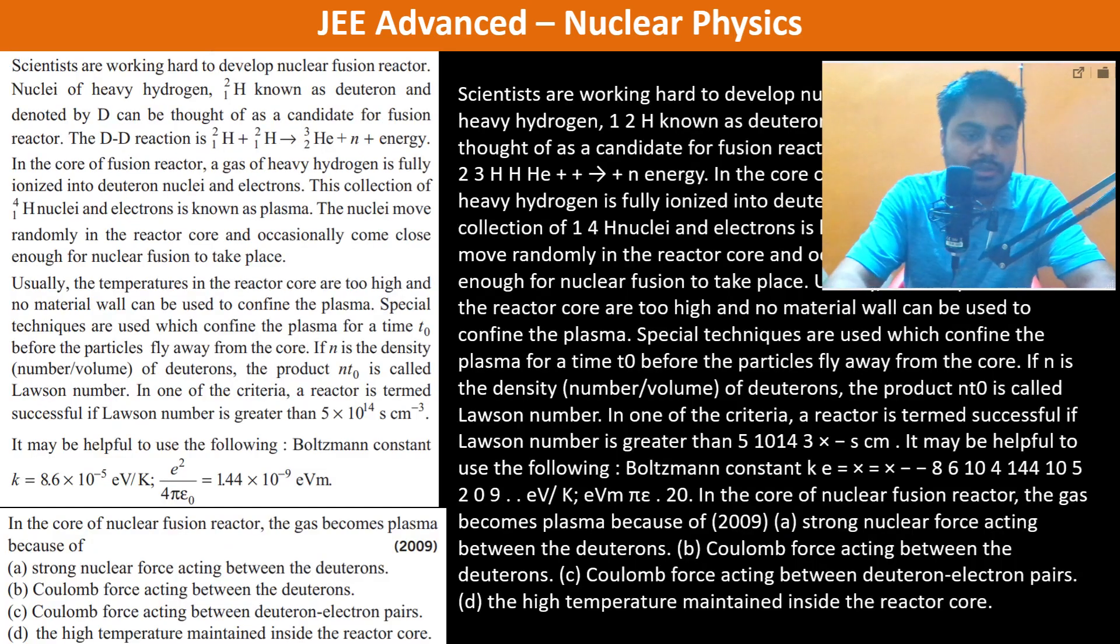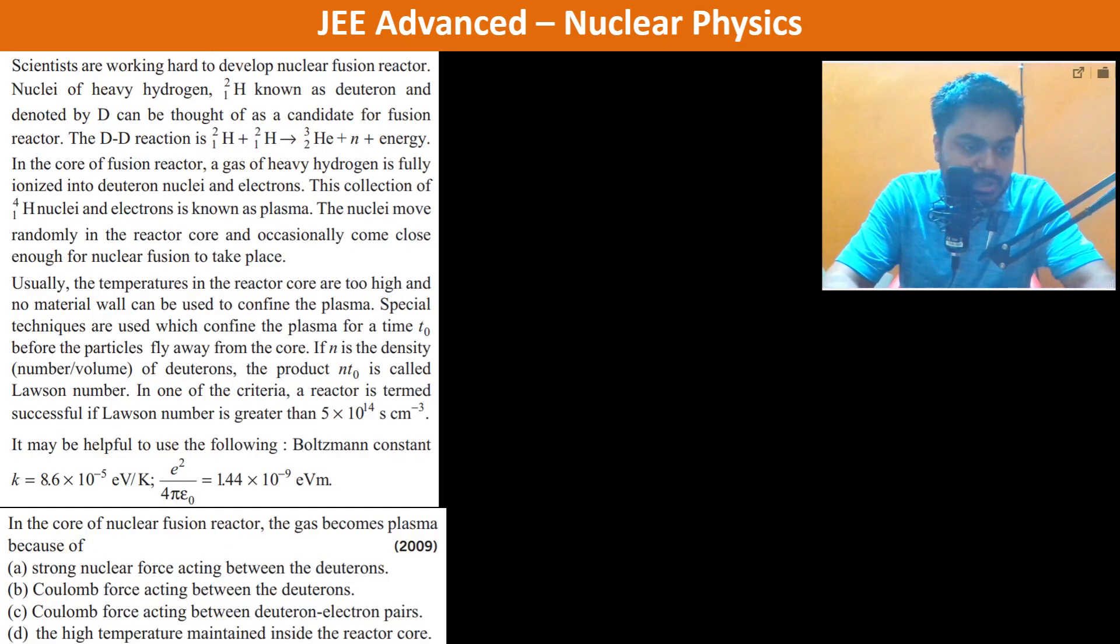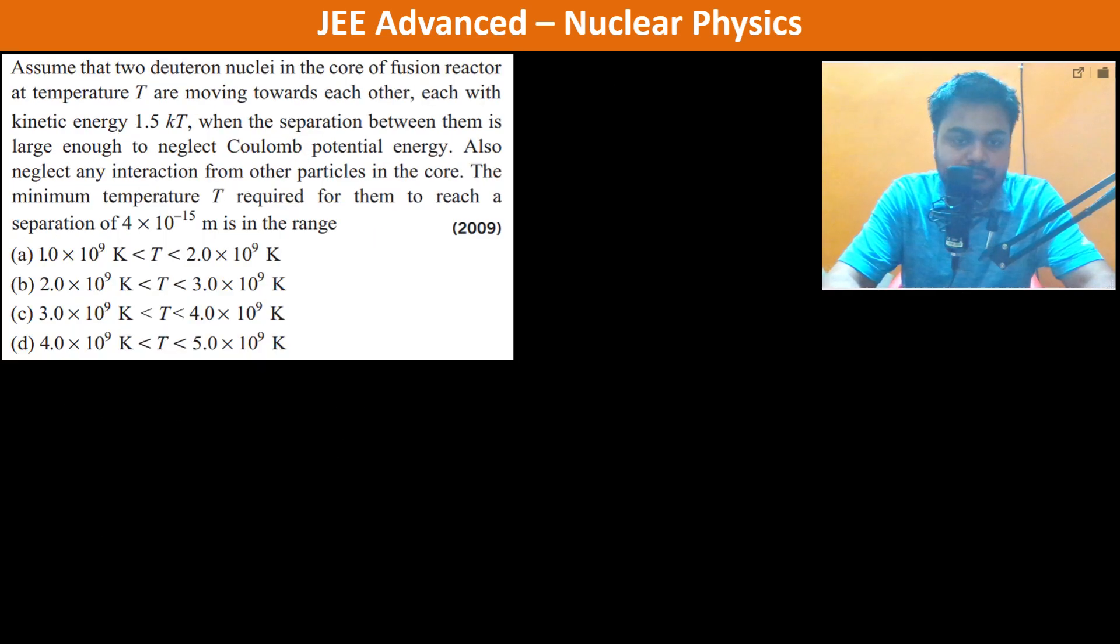Now, solve this. Now, what is k? K is 8.6×10^-5 electron volt per Kelvin.